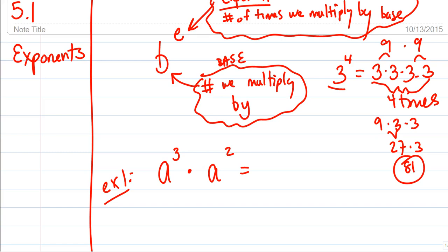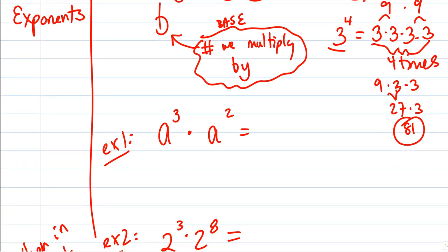What if I have a to the third times a squared? You might think you know — people say a to the fifth, a to the sixth, a to the ninth. I have no doubt, because I had a really good algebra teacher who taught me: when in doubt, if you have any doubt at all, write out what it means. What does a to the third mean? We are multiplying by the base, a, three times.